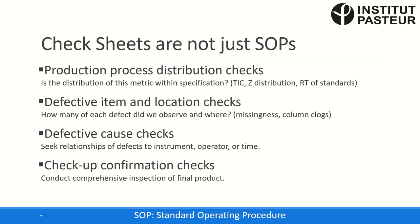The last two types are defective cause checks and checkup confirmation checks. In the defective cause check, we want to do a bit of cause-and-effect sleuthing — understanding what the relationship of defects is to the instrument, the operator, or the time, though you could blow this out to five factors quite easily. Checkup confirmation checks give us a way to put a seal of approval on a final product. You might imagine that a core facility, in handing off data to a researcher, wants to make sure that all the steps they expected to complete have, in fact, been completed.